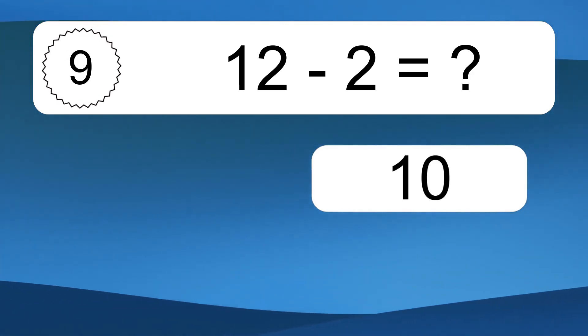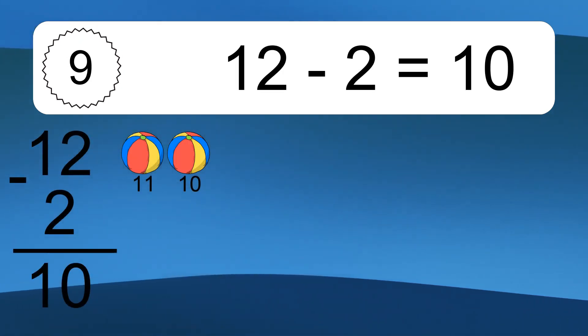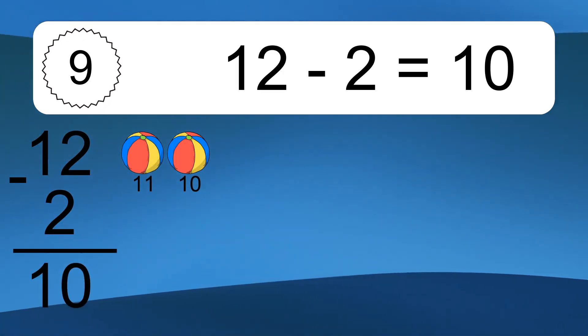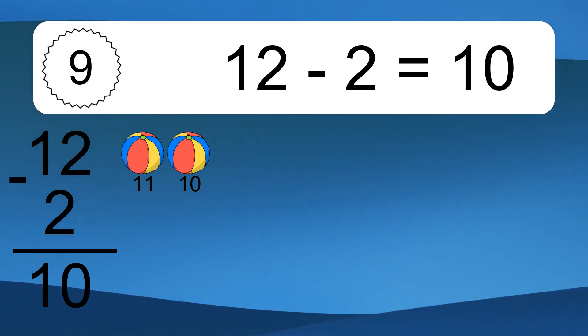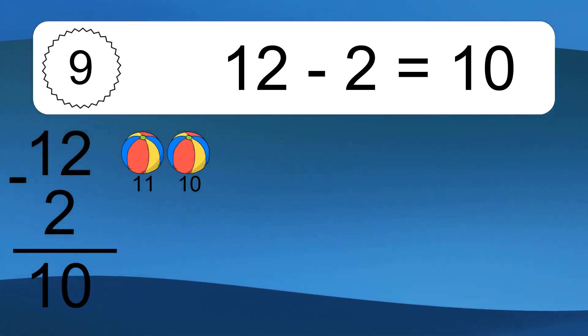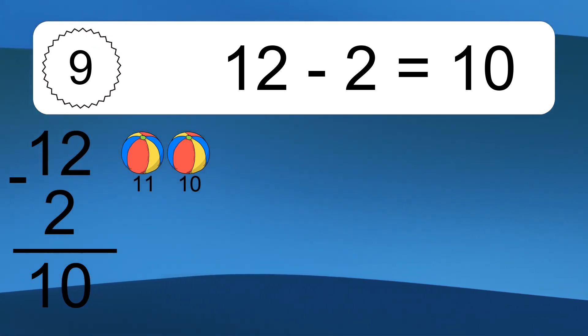12 minus 2 equals what? 12 minus 2 equals 10. Let's count it: 11, 10.